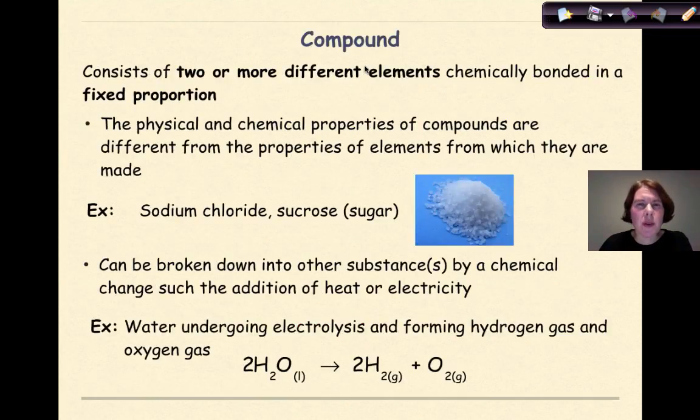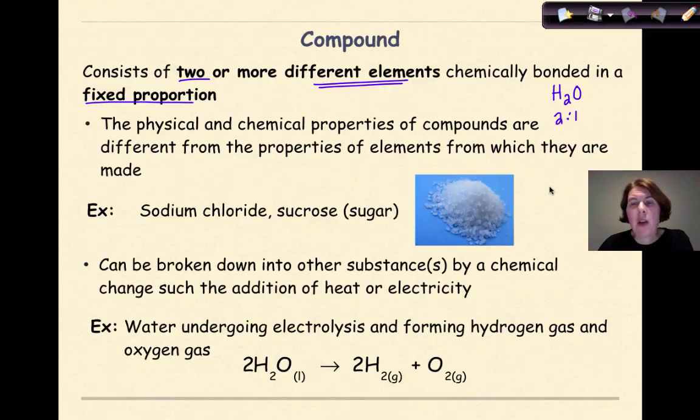Now let's talk about the other pure substance, compounds. Compounds consist of two or more different elements chemically bonded in a fixed proportion. Now you might be saying, well what do you mean by fixed proportion? Let's just take the formula for water. So water is H2O. This is in a fixed proportion. This basically means that for every two hydrogens, I'm going to have one oxygen, and that can't change. If I change that ratio, I'm changing my compound.